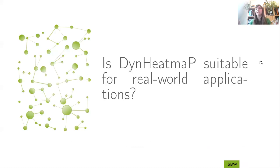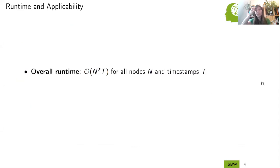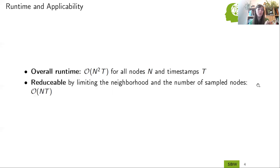Now the question is, is this module suitable also for real-world applications? When you have a look at the overall runtime, the algorithm is quadratic in the number of nodes you see in total in a certain time period multiplied by the number of timestamps you're looking at. And this is quite bad. But if we limit the number of sampled nodes and the number of sampled neighbors, we can already reduce the runtime to linear time. And in addition, when we look at graphs where only one change appears per timestamp, the algorithm runs in constant time for each timestamp.